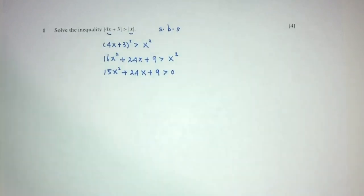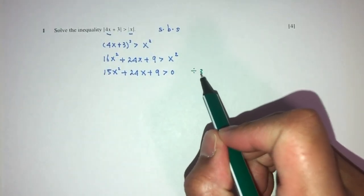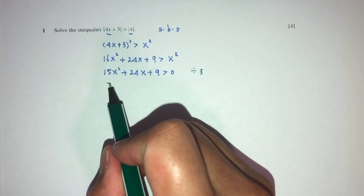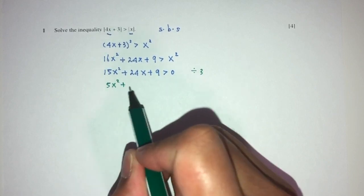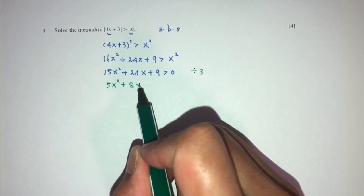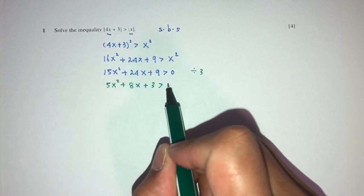Now we can simplify. Send the x² over. You will have 15x² + 24x + 9 > 0. We can divide by 3 everywhere, giving us 5x² + 8x + 3 > 0.